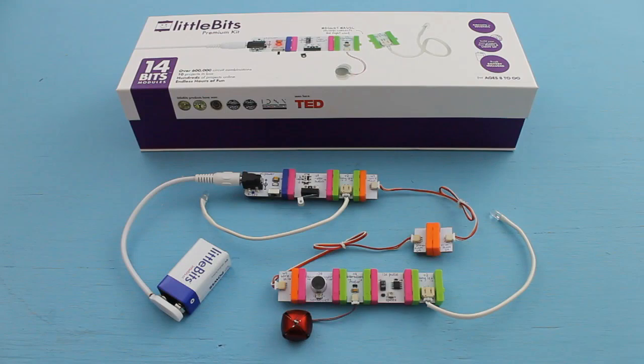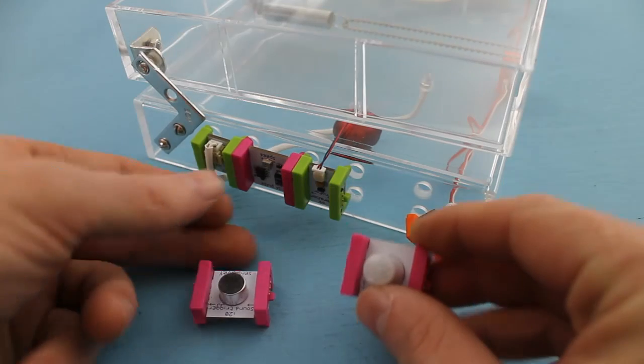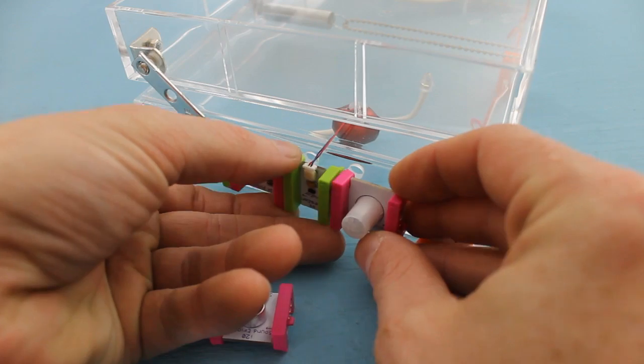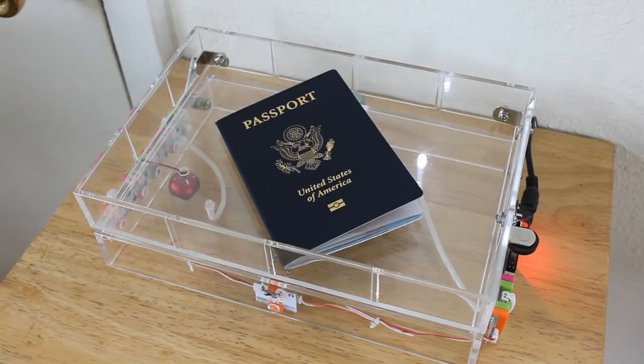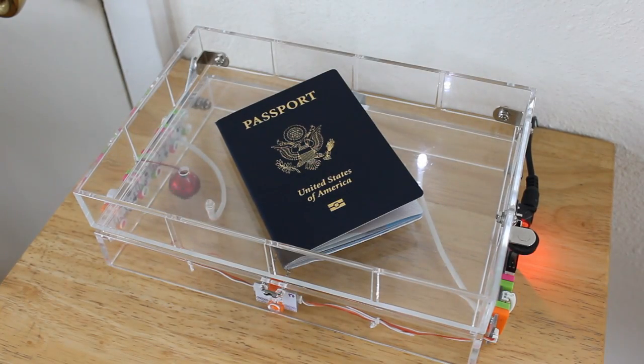To build one, you'll need LittleBit's Premium Edition Explorer Kit, plus about 20 bucks worth of other stuff. You can also upgrade the circuit by swapping out the sound trigger bit for a motion trigger bit, which makes the device respond to movement instead of noise.